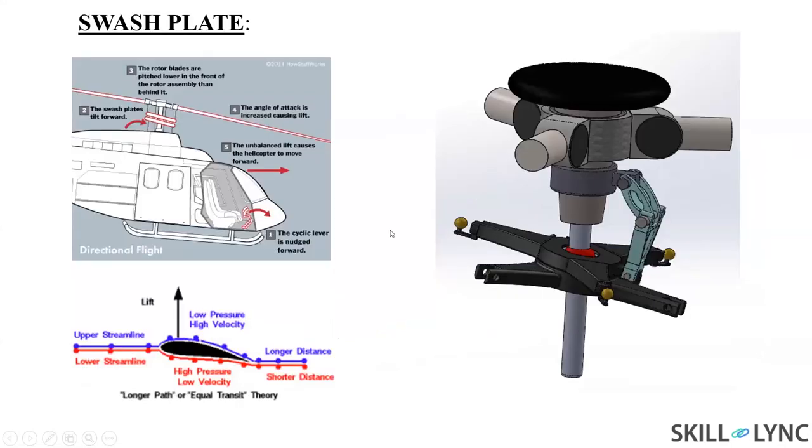The main thing about the swash plate mechanism: on the left hand side you can see these two are the swash plates. The upper one is an upper swash plate and the bottom is a bottom swash plate. The bottom swash plate is fixed, it won't be rotating at all.